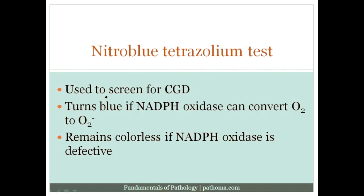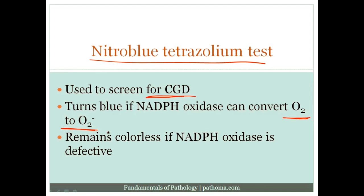The next important principle concerning chronic granulomatous disease is the nitroblue tetrazolium test, i.e. the NBT test. This is a test used to screen for chronic granulomatous disease, and it asks the question: do we have the ability to convert oxygen to superoxide? If oxygen can be converted to superoxide, the superoxide will actually change the NBT — nitroblue tetrazolium — to blue.